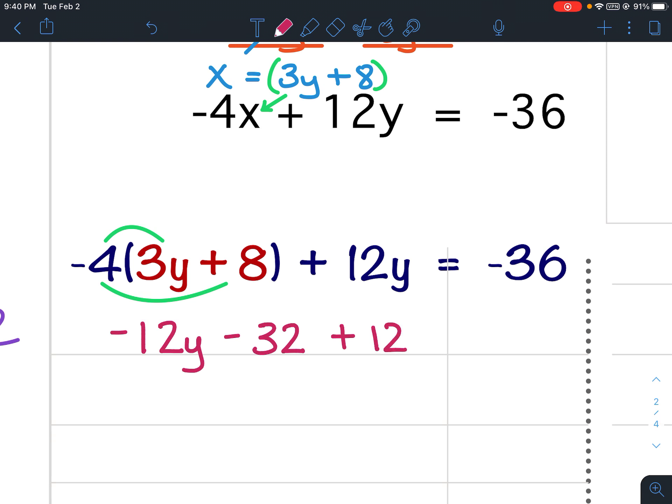Bring down the plus 12y. Keep your equal signs lined up. Bring down the negative 36.